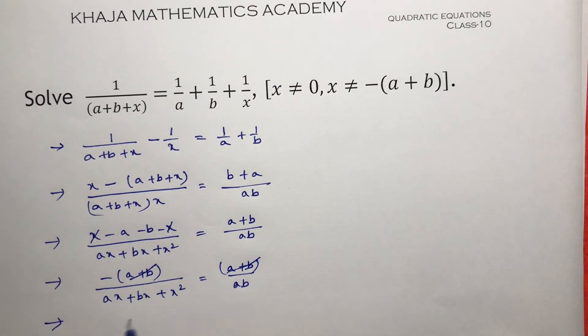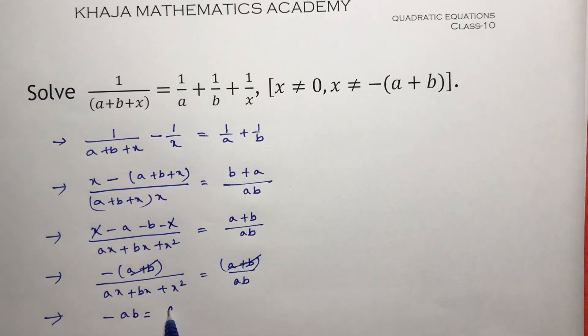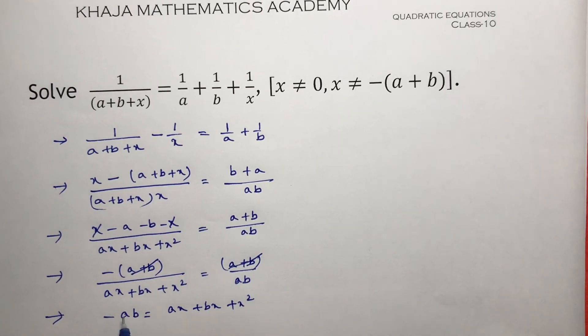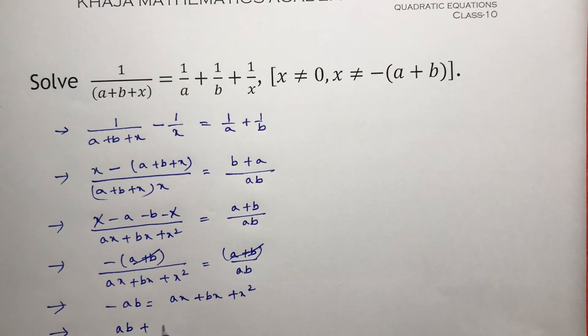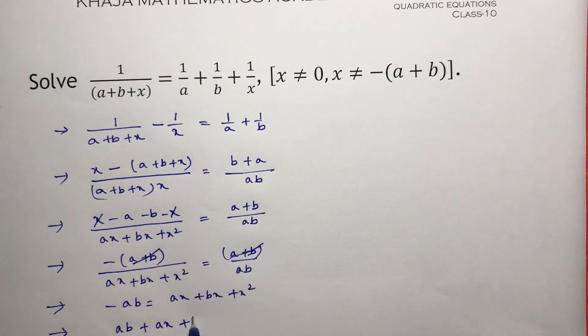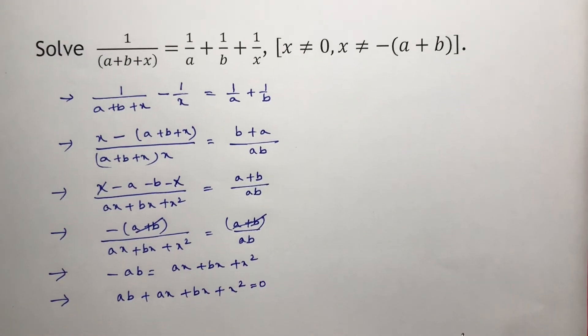If I cross multiply, minus ab equals ax plus bx plus x squared. Now send this minus ab to the other side. I am transposing: ab plus ax plus bx plus x squared equals 0.